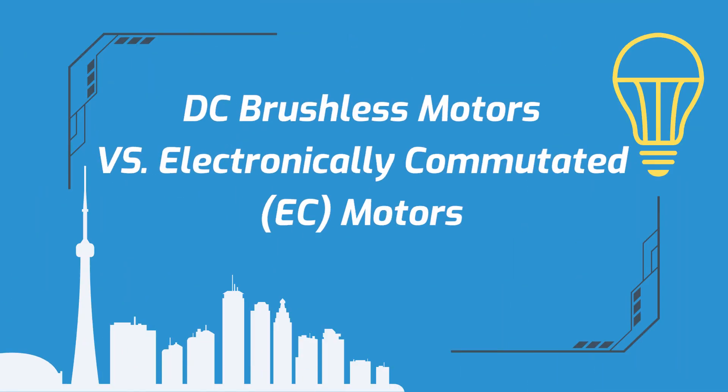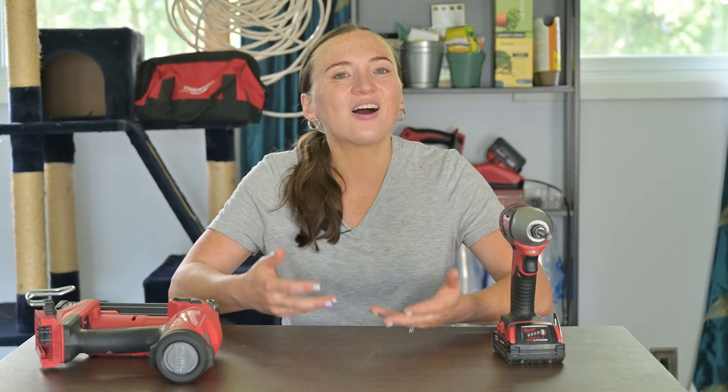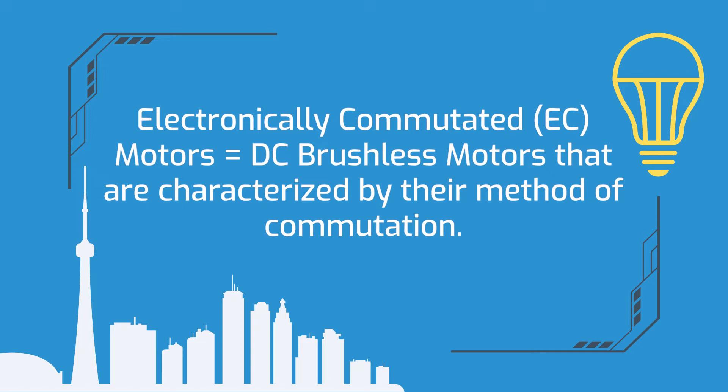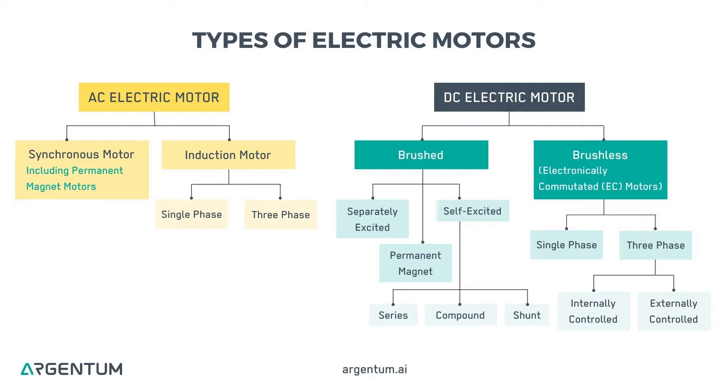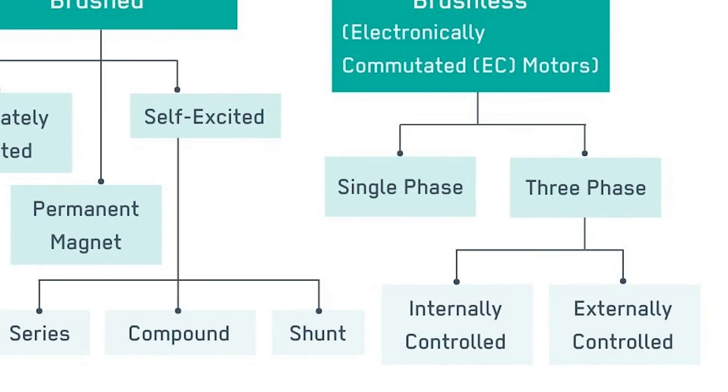Now let's talk about DC brushless motors and electronically commutated, or EC, motors. If you've looked into DC brushless motors, you've probably come across EC motors and wondered what the difference is. Honestly, there's not really much of a difference. EC motors are just DC brushless motors characterized by their method of commutation rather than by whether or not they include brushes. The only true difference is that EC motors can be internally or externally controlled, and that external control allows them to be used in high-heat applications.